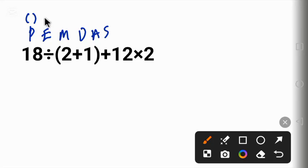E stands for exponents, something like 2 raised to power 2. M and D stand for multiplication and division. You evaluate from left to right. Finally, A and S stand for addition and subtraction. You evaluate from left to right.